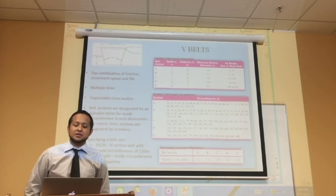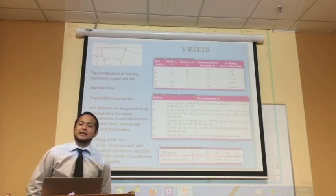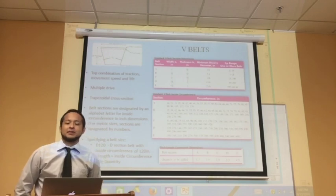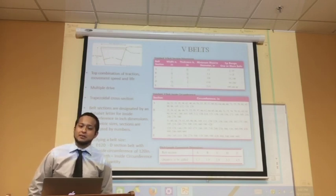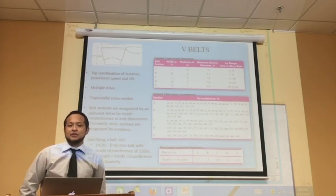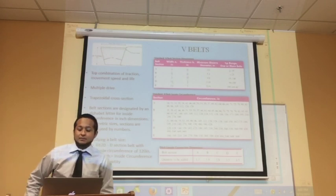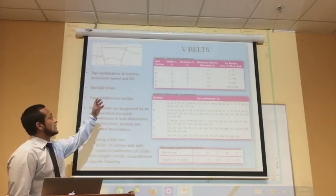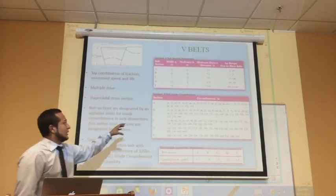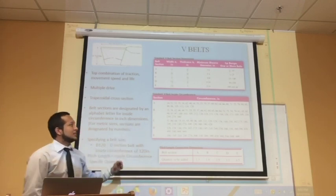V-belts offer the top combination of traction, movement speed, and life. Unlike flat belts, they lack in efficiency but make up for it by having the ability to have multiple belts on a single sheave, thus making it a multiple drive. The cross-section of a V-belt is that of a trapezoid, as seen in the nomenclature above. These sections are designated by an alphabet letter for inside circumference in inch dimensions. Here we have a table of each section and its dimensions, and another showing the standard belt lengths for each section.